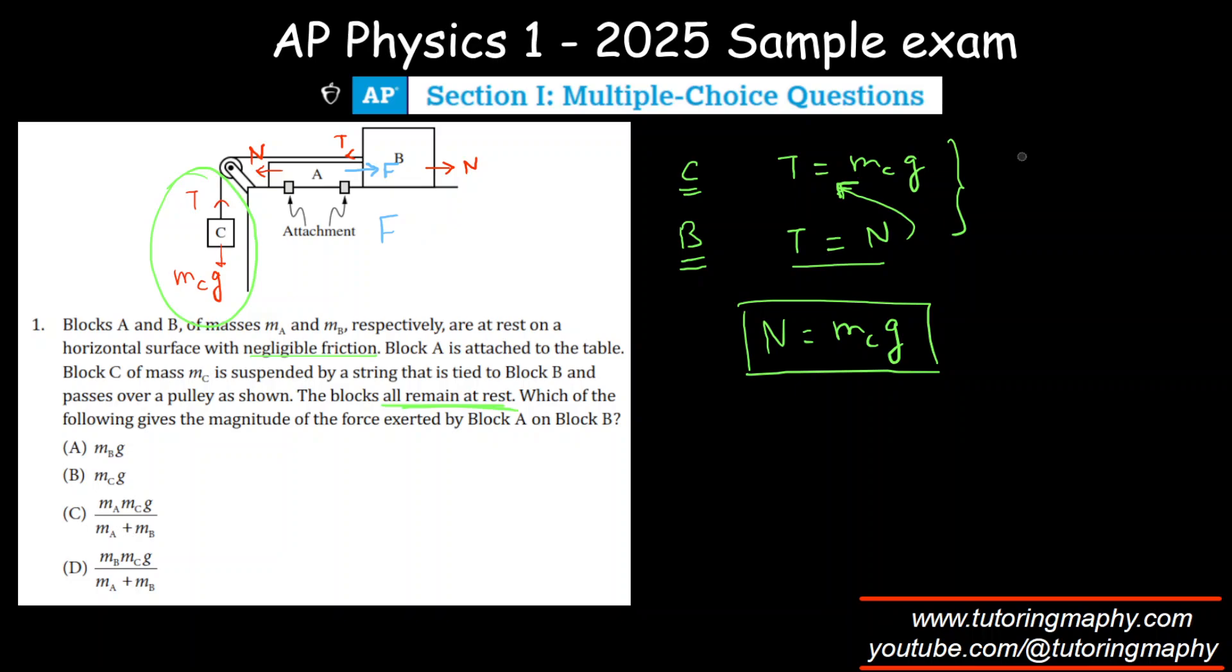If I were to draw, if I were to write Newton's law on block A, it would look like F is equal to N, where this is the force due to the attachment. Anyway, that's not required. But yeah, N is equal to MCG. That's pretty straightforward. So the answer is option B.